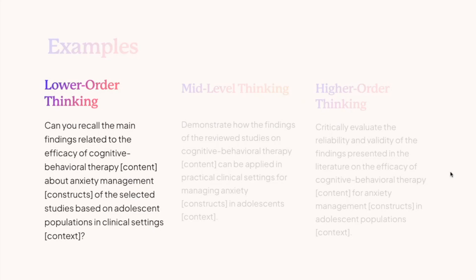Let's have a quick example. If I ask ChatGPT, 'Can you recall the main findings related to the efficacy of cognitive behavioral therapy' — that's the content — 'about anxiety management' — that's my construct — 'of selected studies based on adolescent populations in the clinical setting' — that's the context. You can see all four parts of the prompt are present, and I've asked it to recall only — lower order thinking.